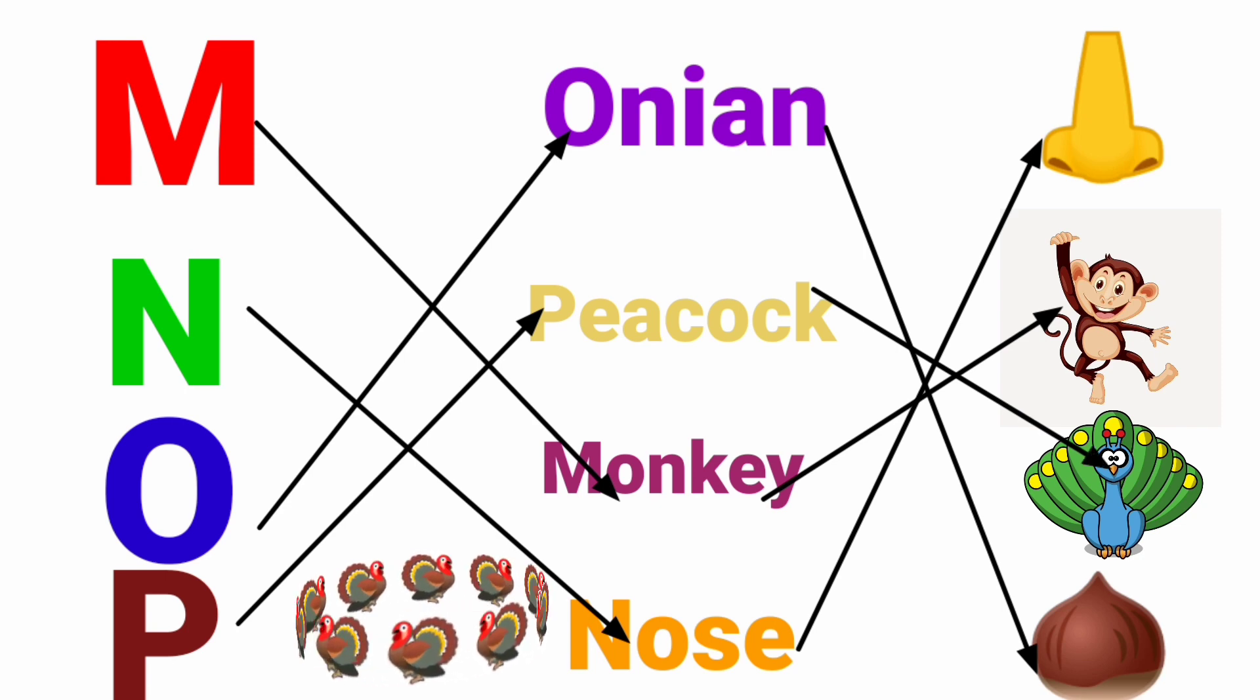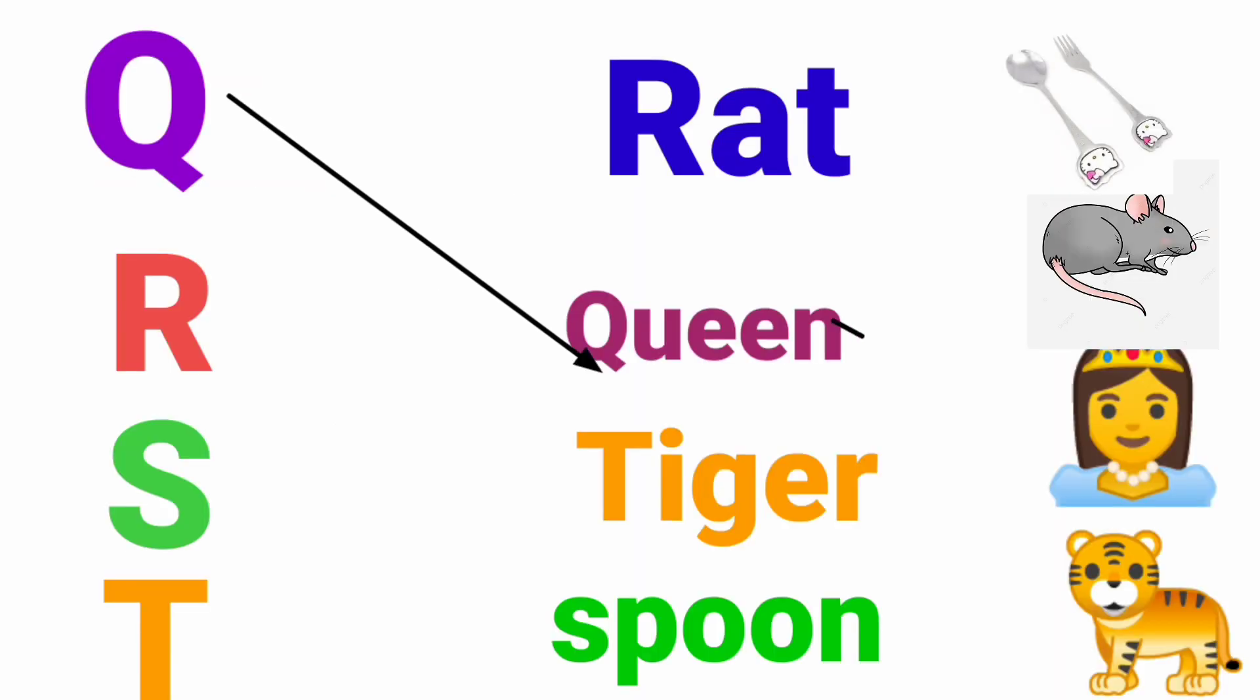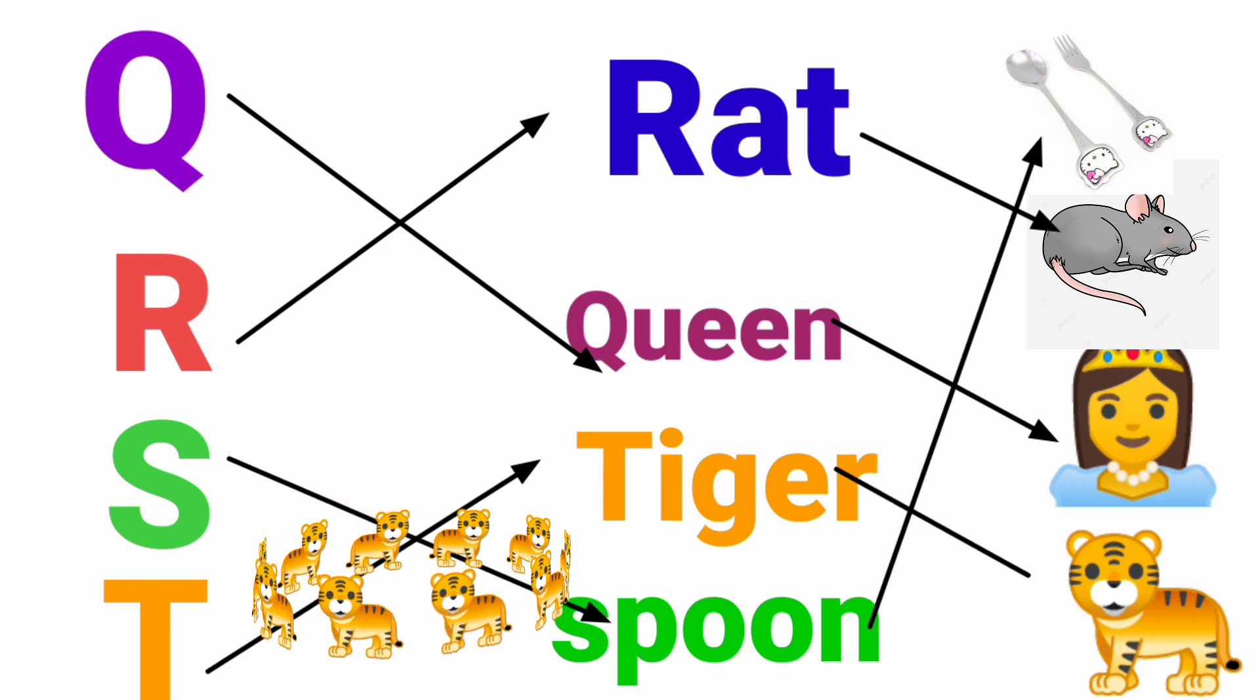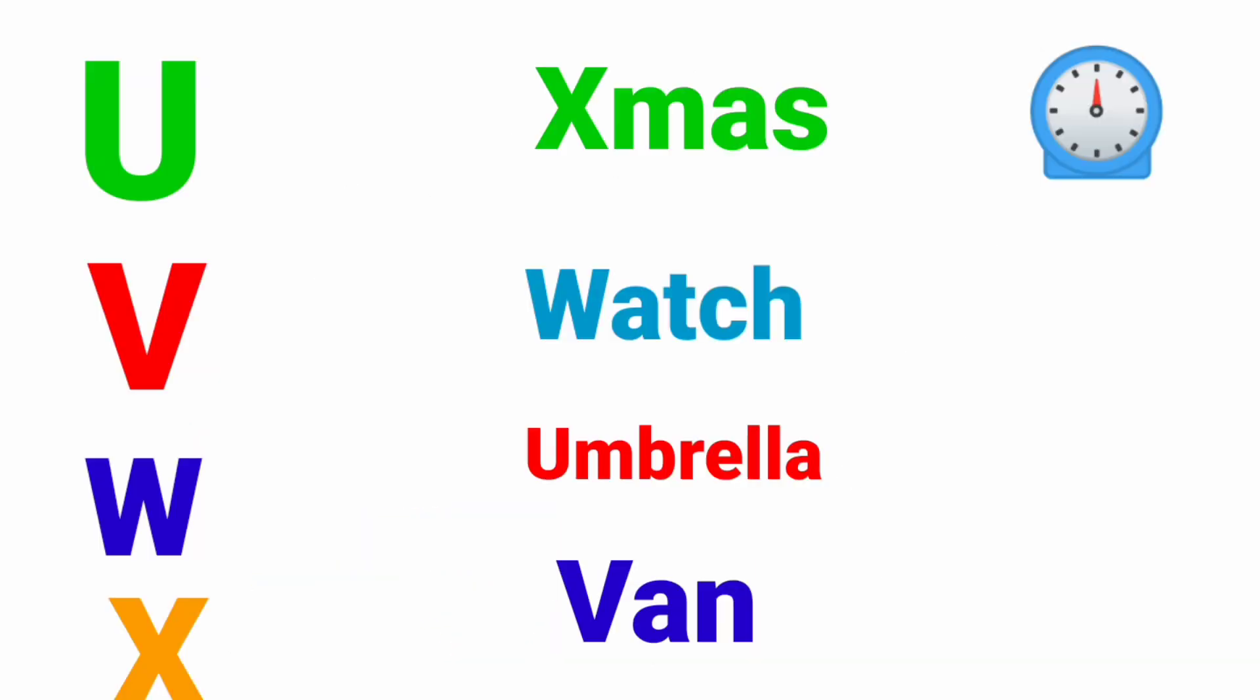P for Peacock. Q for Queen. R for Red. S for Spoon. T for Tiger. U for Umbrella.